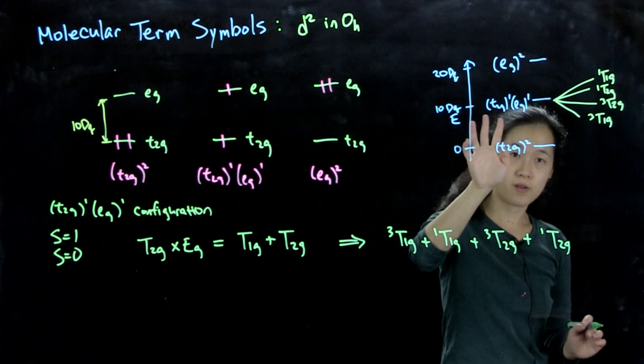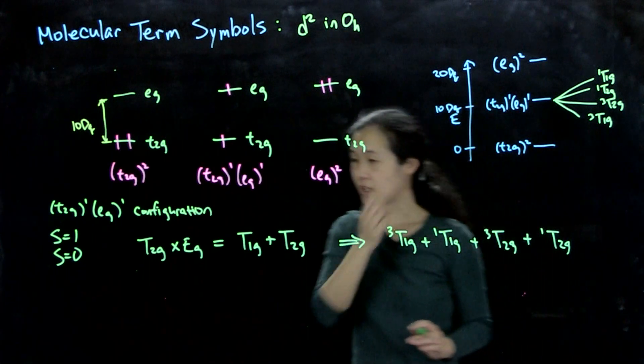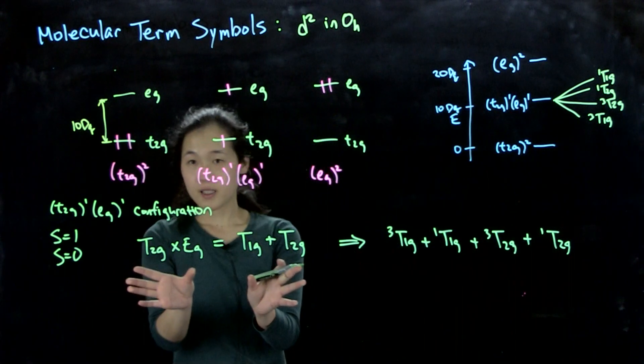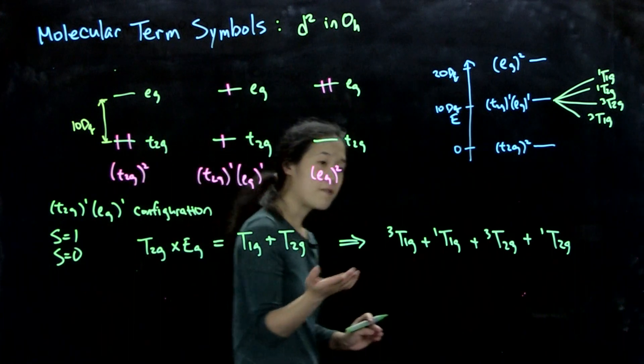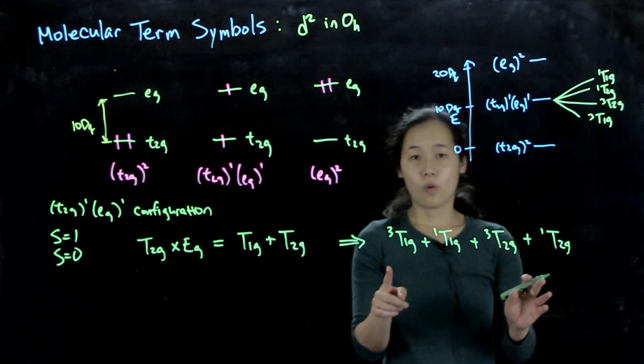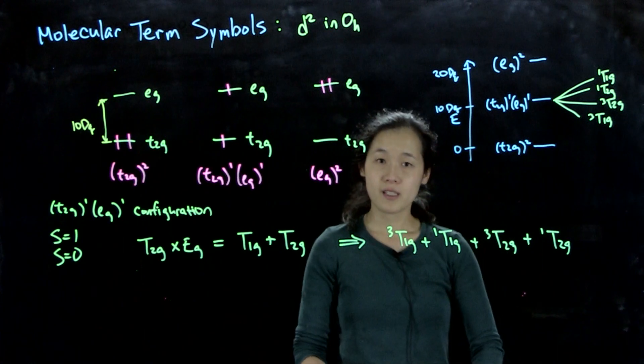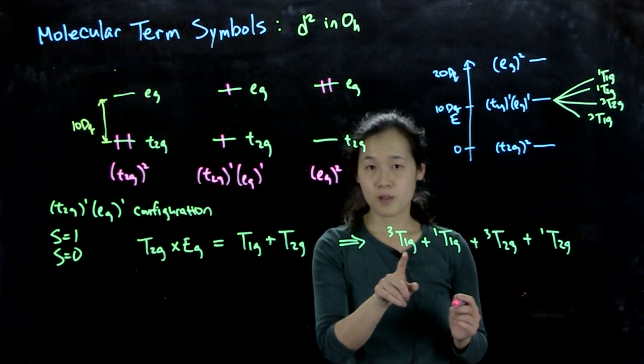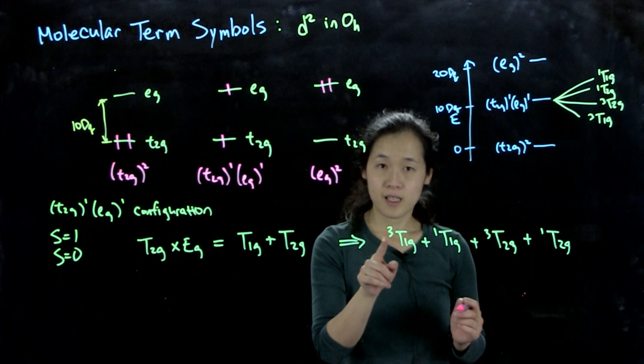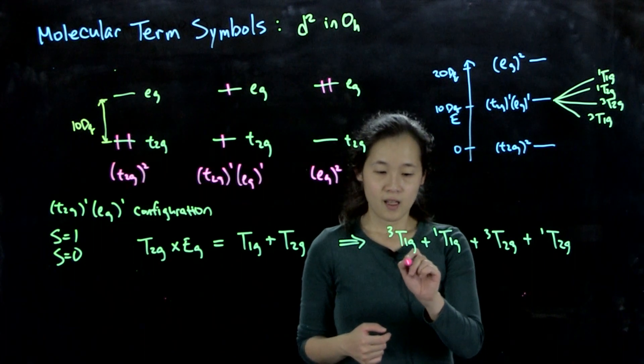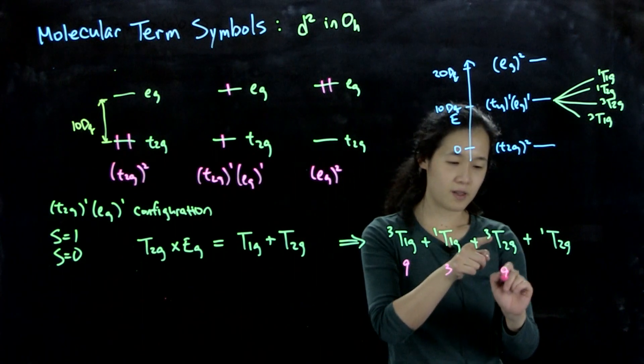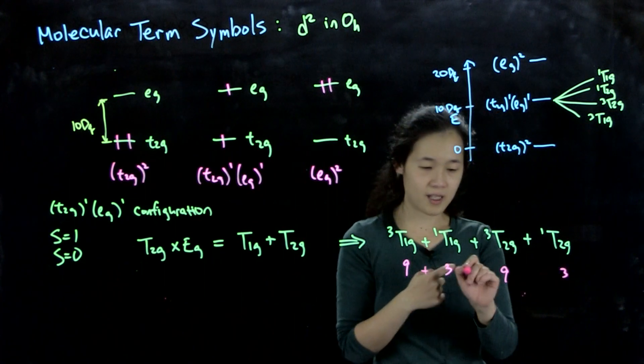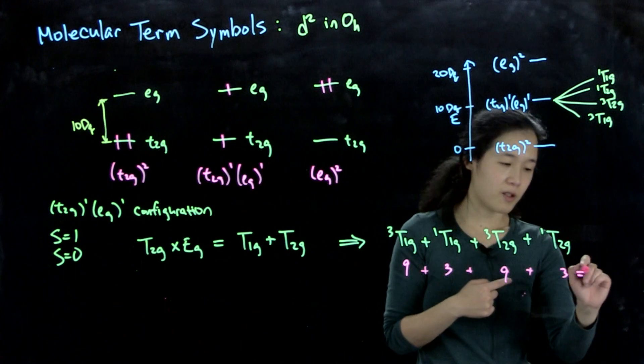So those are our four different terms that arise from this t2g¹, eg¹ configuration. And again, we can get that out by this direct product and from these spin terms. To kind of confirm this for you, we can actually also count our degeneracy. So the microstates are also. And a triplet state is triplet degenerate. So this should be 9 double degeneracy times 3, then also 9 and 3. So these are added up together. So this equals 24.